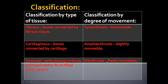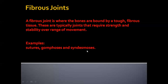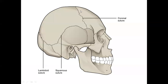In this video, we'll discuss the fibrous joint in detail and look at common examples. A fibrous joint is where bones are bound by tough fibrous tissues. These are typically joints that require strength and stability over range of movement, since the bones do not move. Examples of fibrous joints in our body include sutures, gomphosis, and syndesmosis.